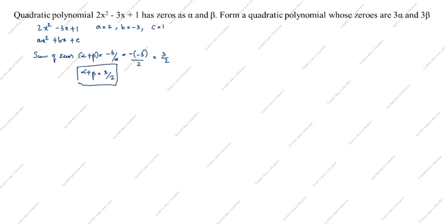Next, the product of zeros: alpha times beta equals c divided by a, which equals 1 by 2. So alpha beta equals 1 by 2.